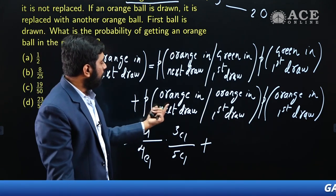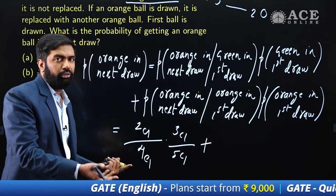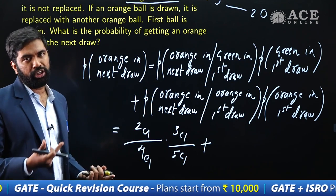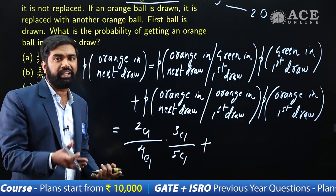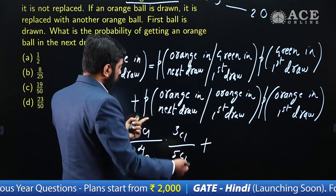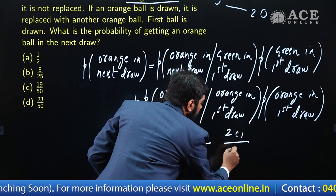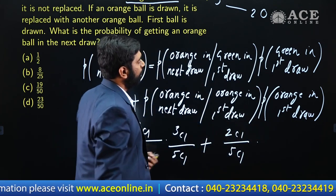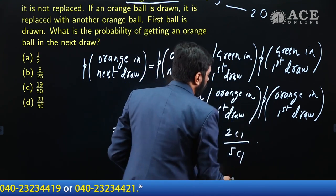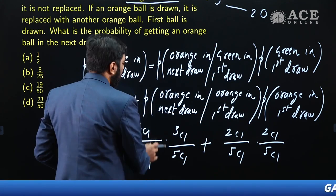For the second term, given orange was drawn first: orange is replaced, so the box still has 5 objects with 2 orange. P(orange in next | orange first) = 2C1 / 5C1 = 2/5. P(orange in first) = 2C1 / 5C1 = 2/5. So the second term is (2/5) × (2/5).